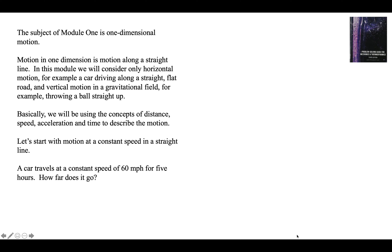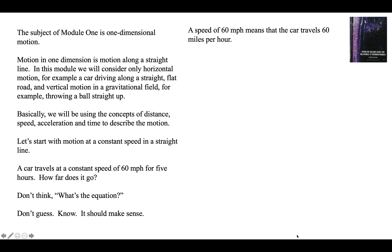A car travels at a constant speed of 60 miles per hour for five hours. How far does it go? Don't think 'what's the equation?' — don't guess. Your answer should not be a guess. The speed of 60 miles per hour means the car traveled 60 miles each hour. If you go 60 miles each hour for five hours, that's 300 miles. That should make sense to you. You shouldn't need an equation for that.